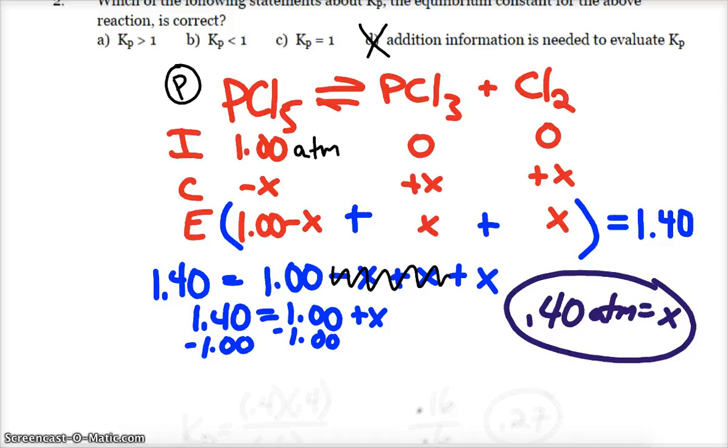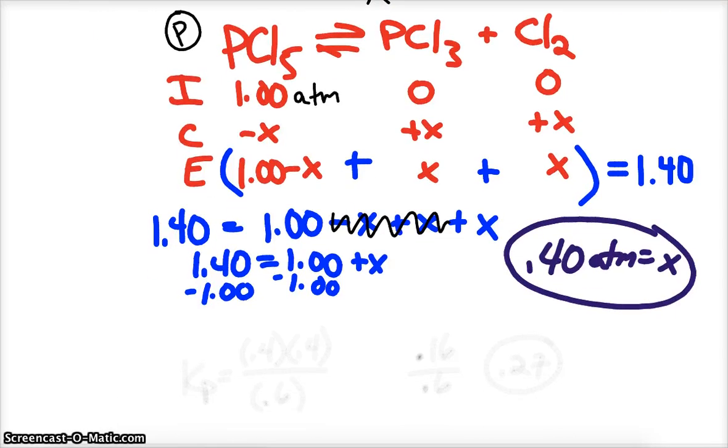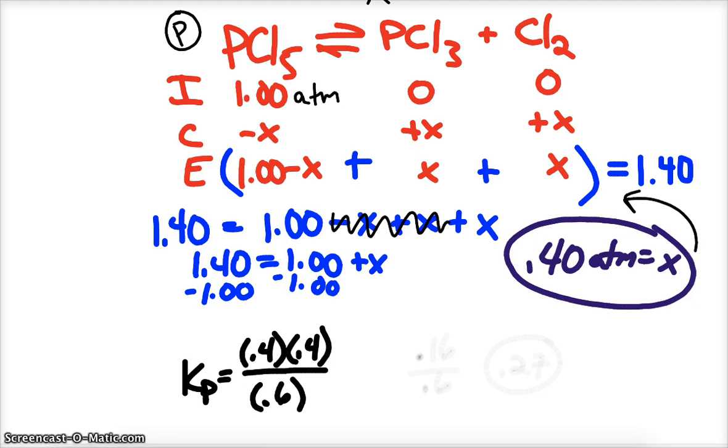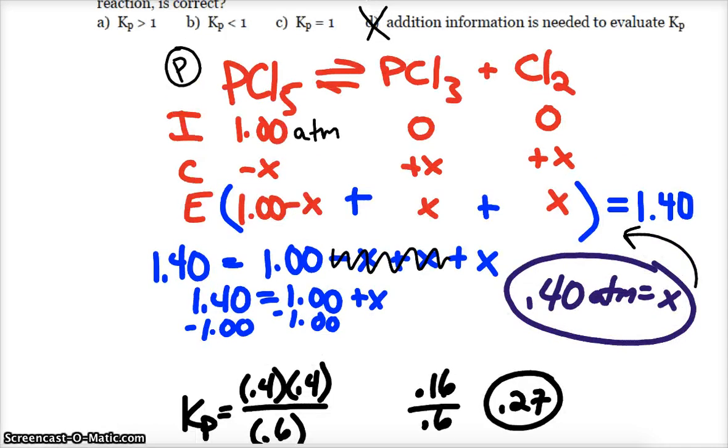Now that we have our x value, I can plug that in to my equilibrium row. When I do that for x, I set up my Kp expression, which is just like Kc, except we're using pressures. So my products, PCl3 and Cl2, are x and x, so 0.4 times 0.4. On the bottom is 1 minus x, so 1 minus 0.4 is 0.6. Essentially we get 0.16 divided by 0.6, we get 0.27. That would lead us to answer this question that our Kp value is less than 1.